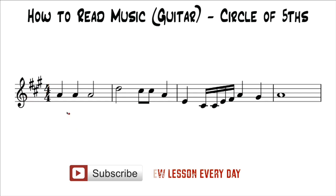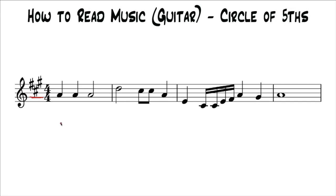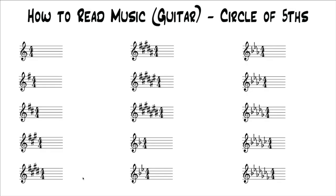For example, what's right here is the key signature for A major. The reason it's showing three sharps is because the A major scale has three sharps in it — a C sharp, an F sharp, and a G sharp, which are all represented right here. Here are all the possibilities for key signatures, and each one specifically relates to a major scale.